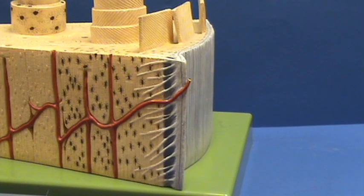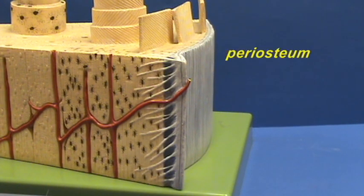The outer surface of bone is covered by the periosteum. The gray material that you see over here represents the periosteum.